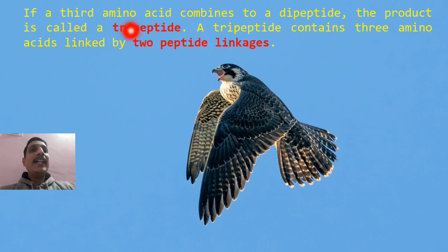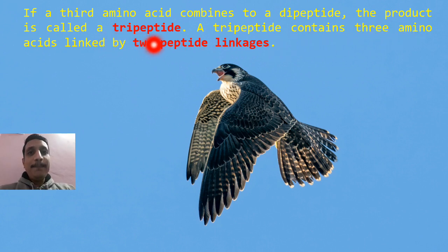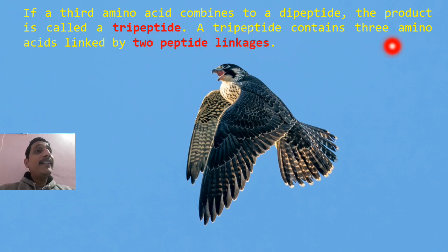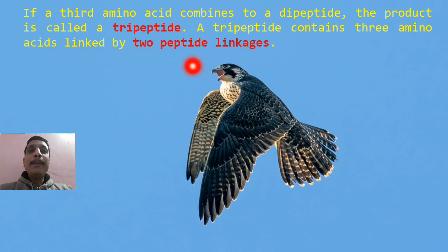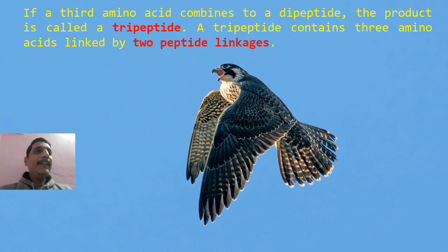If a third amino acid combines with a dipeptide, the product is called a tripeptide, formed by the reaction between three amino acids. A tripeptide contains three amino acids linked by two peptide linkages. Dipeptide contains one peptide linkage; tripeptide contains two peptide linkages.